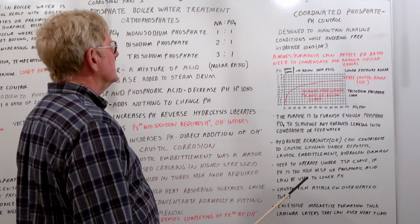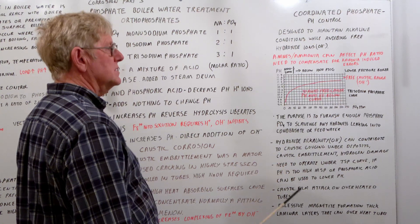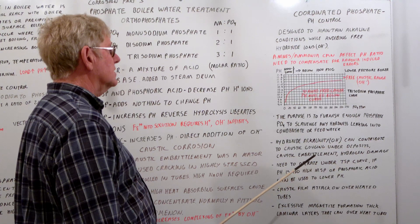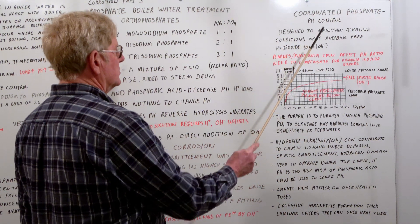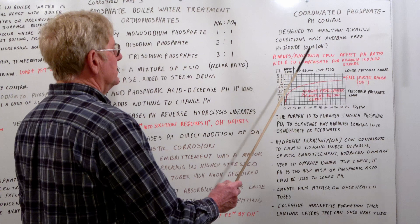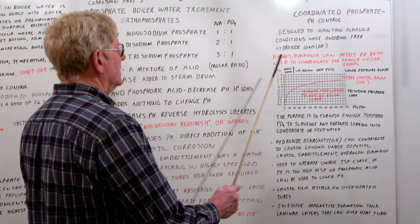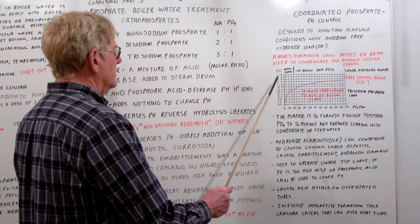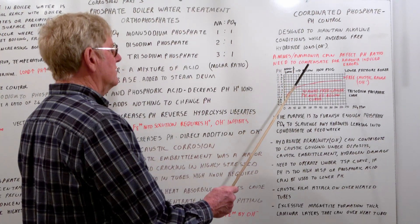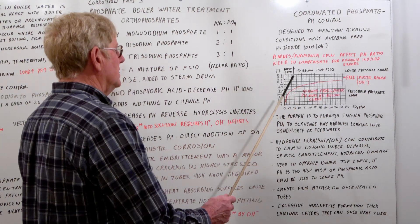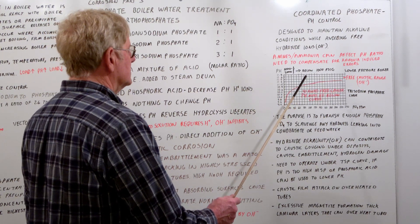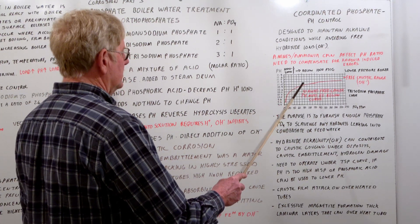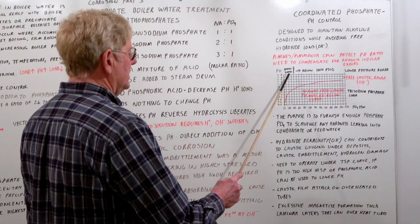This is the coordinated phosphate control. There are two types of phosphate control: coordinated and congruent. Coordinated is a pH control designed to maintain alkalinity conditions while avoiding free hydroxide ions. One thing to be aware of: amines and ammonia can affect the pH ratio. You need to compensate for ammonia-induced errors. If you add ammonium hydroxide to your condensate, it will show up in your boiler drums and skew the pH.